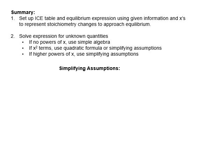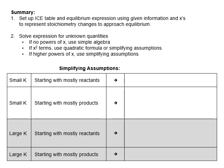Let's go over some strategies for using these simplifying assumptions. Your strategy depends on whether you have a small or large k and what you're starting with. When we say k is small, we typically mean much less than 1.